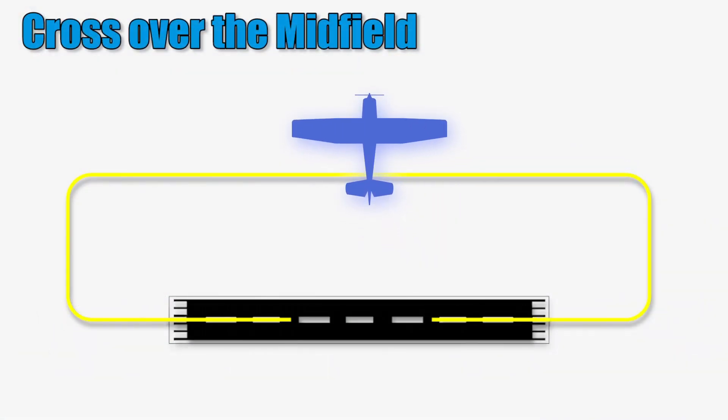Next, the pilot flies clear of the downwind leg by approximately 2 nautical miles. Then, the pilot makes a descending turn opposite of the traffic pattern direction and enters the downwind leg at a 45-degree angle flying towards the approach end of the traffic pattern runway at traffic pattern altitude.